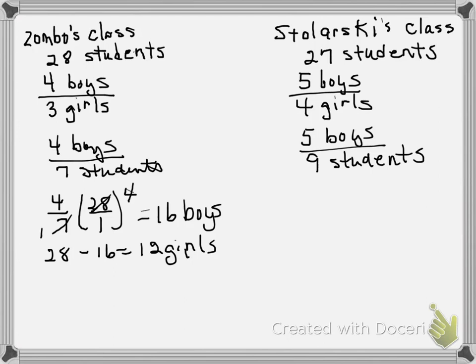So if there are 27 students, then 5 9ths of the 27 are boys. I multiply 5 9ths times 27. 9 into 27 is 3.